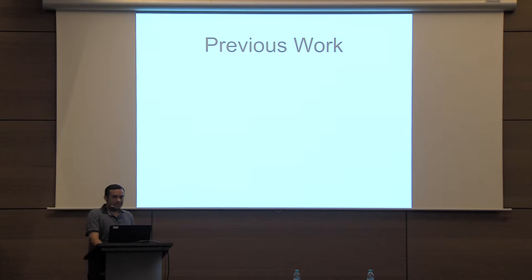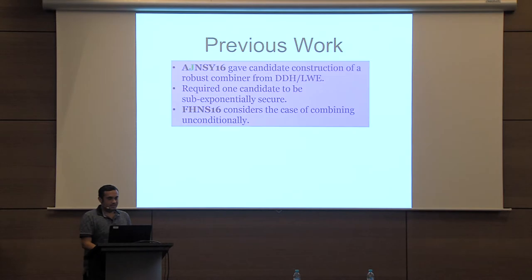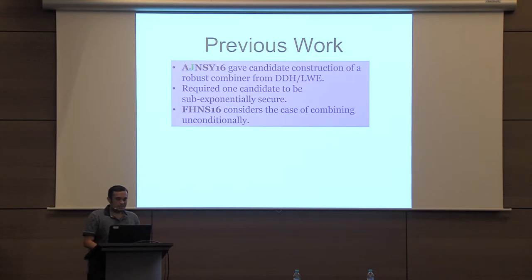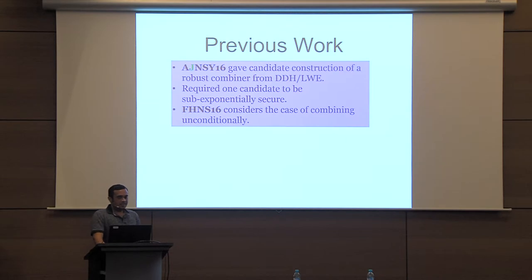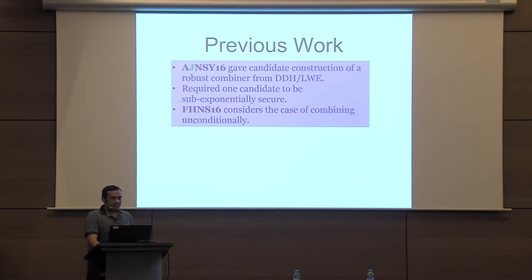In Crypto 2016, our work gave a candidate construction of a robust combiner from assumptions of DDH and LWE, but required the secure candidate to be sub-exponentially secure. A concurrent work by Fischlin et al. considered combining candidates unconditionally, but could only give results for a constant number of candidates.